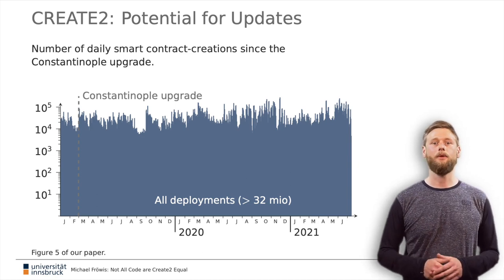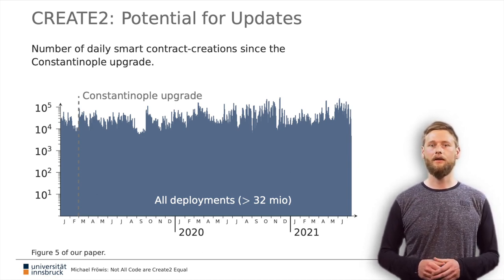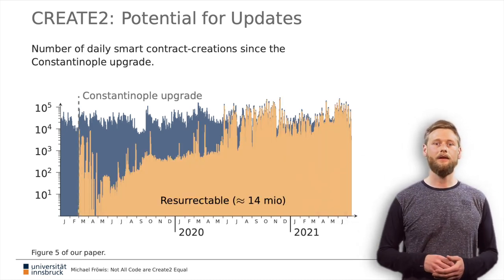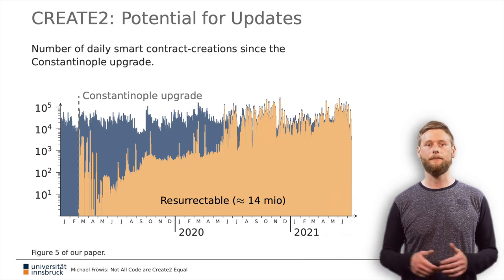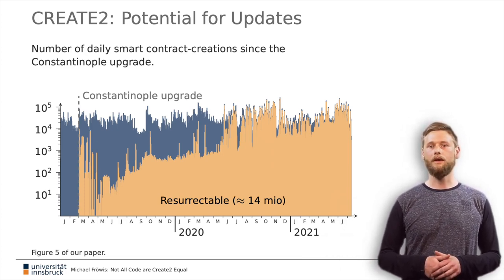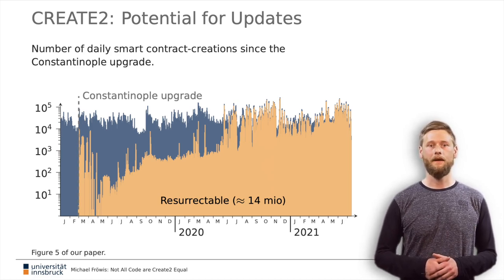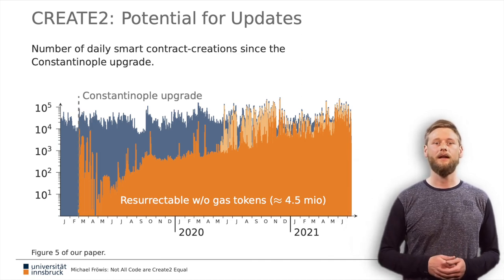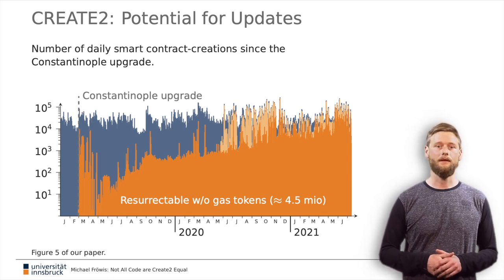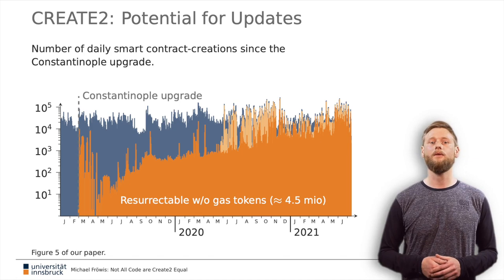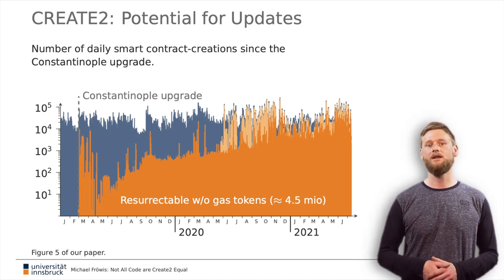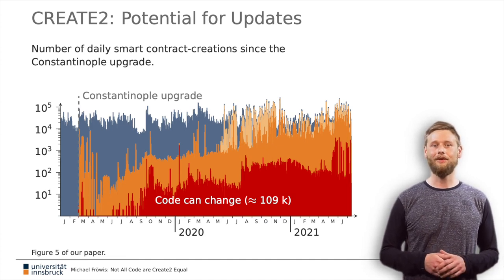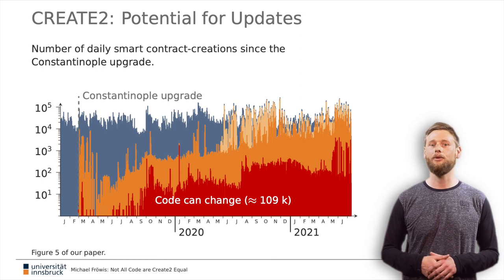The graph shows the number of deployments per day, staying roughly constant between 10,000 and 100,000. In total, we observe 32 million accounts created since the upgrade. In orange, we see the approximately 14 million contracts deployed with CREATE2 that contain a self-destruct instruction — meaning they can potentially be resurrected. CREATE2 usage picked up in 2020 and dominates in 2021, though more than two-thirds of all resurrectable accounts belong to gas tokens. Most interesting are the approximately 100,000 accounts shown in red, which our heuristic identified as having the potential to change their code in the future.